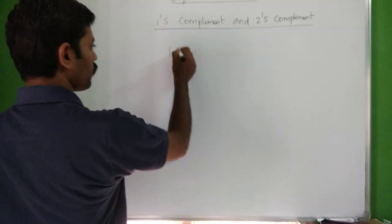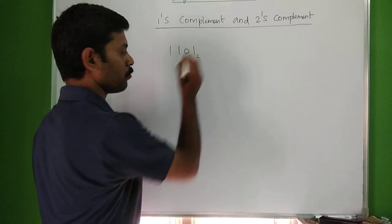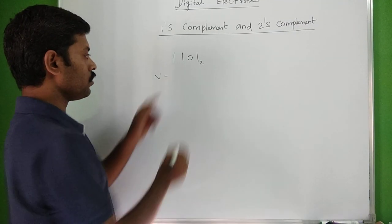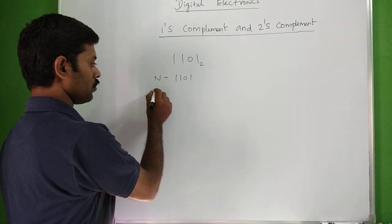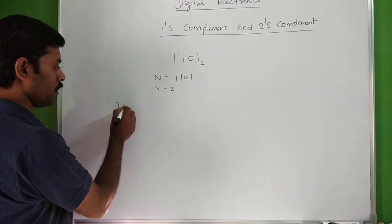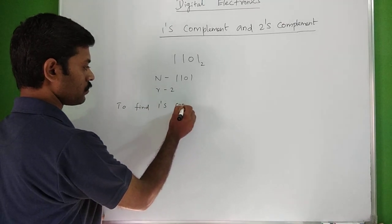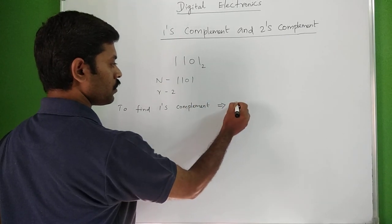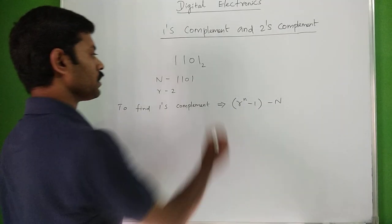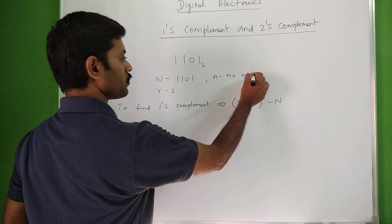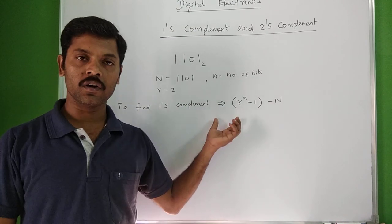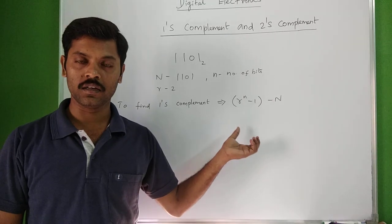For example, the binary number is 1 1 0 1. This is a base-2 number. N is the given number, so N = 1 1 0 1. R is the base, so R = 2. The formula to find the 1's complement is: r to the power of n, minus 1, minus N. Here, small n is the number of bits.